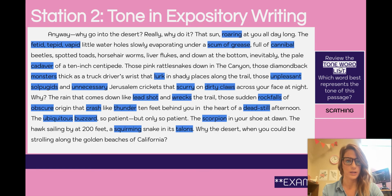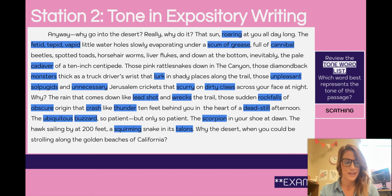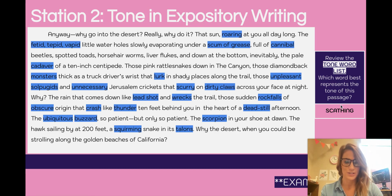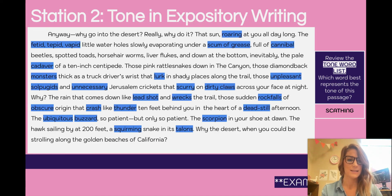The next thing is to go to the tone word list. You're going to click on the link, which opens up the tone word list, and pick the word that you think best represents the passage. In this case, because the author is just tearing the desert apart — listing all the things that are horrible about it — I thought that 'scathing' was the best tone. Remember, this reflects how the author feels about the subject, and in this case, he clearly hates the desert. So I've got 'scathing.'